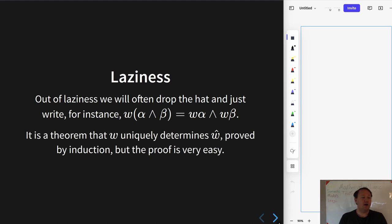And then as another matter of laziness, we would like to know that a given W always uniquely determines what W hat is, that W hat exists and is unique, but the proof is an easy use of induction and so I'm going to omit it.